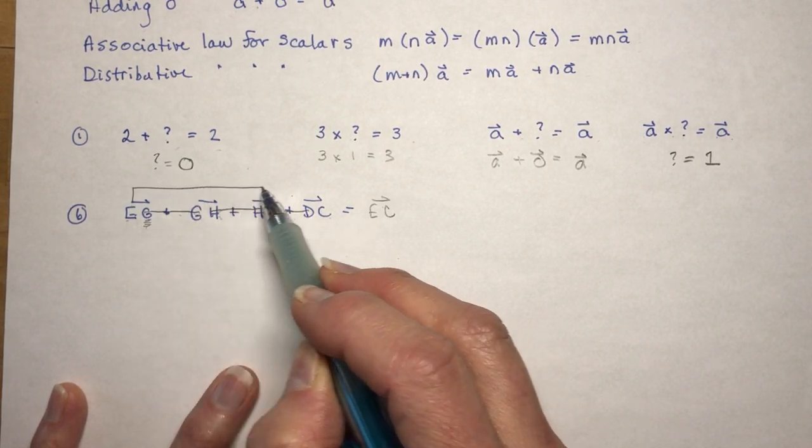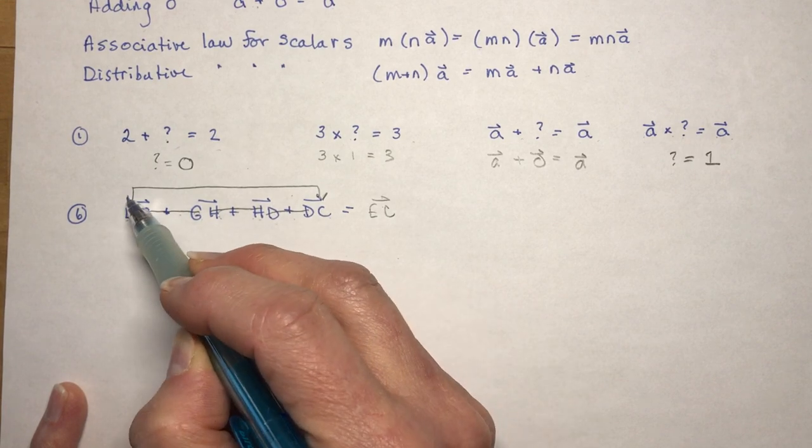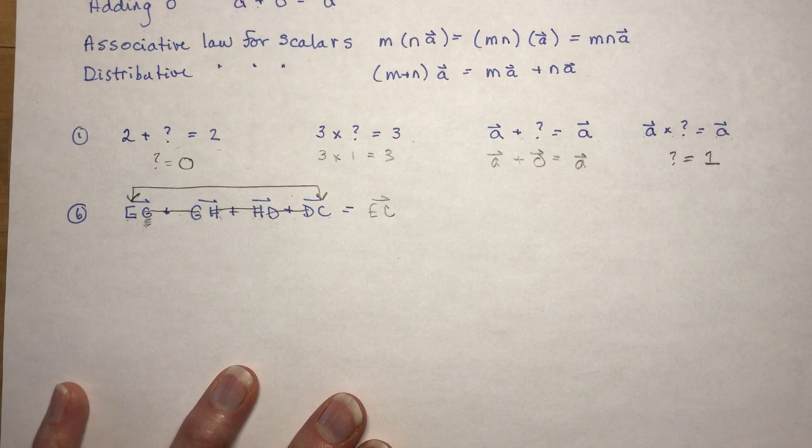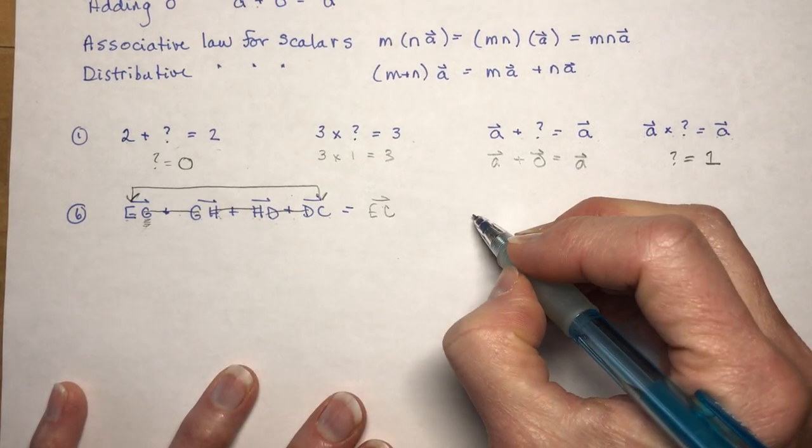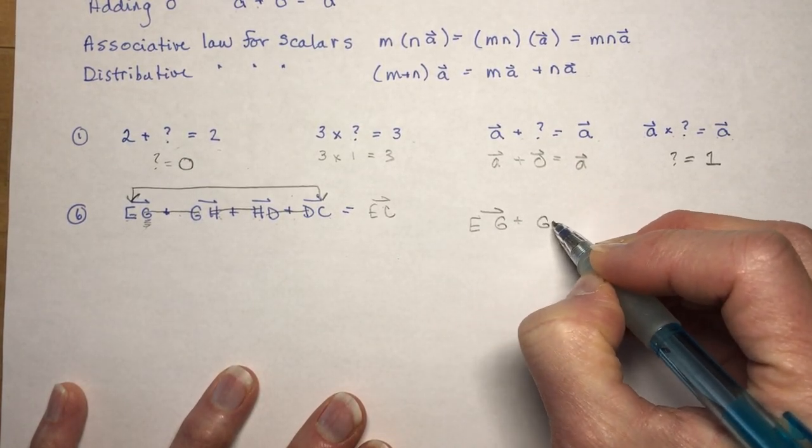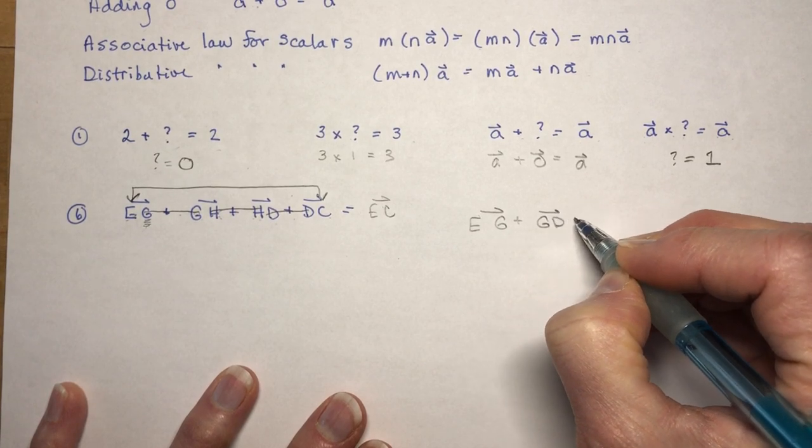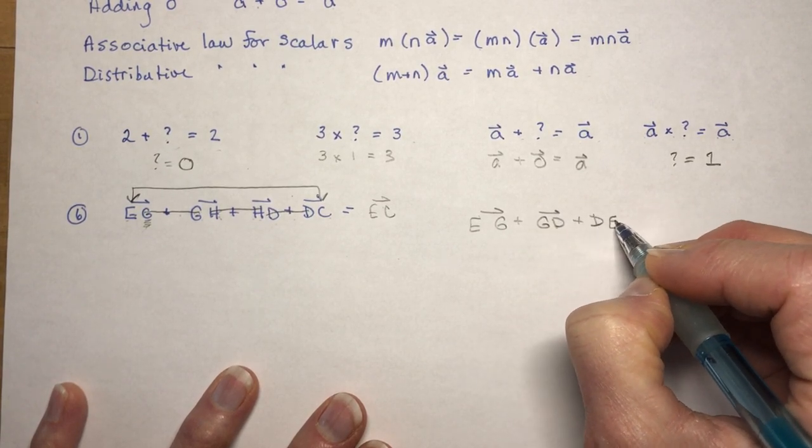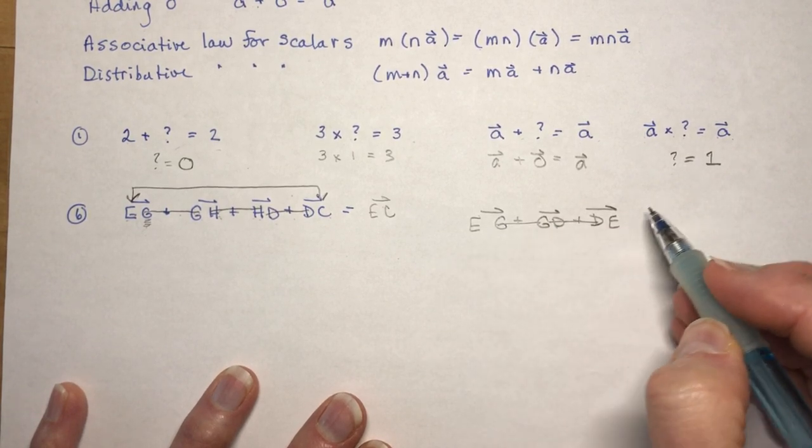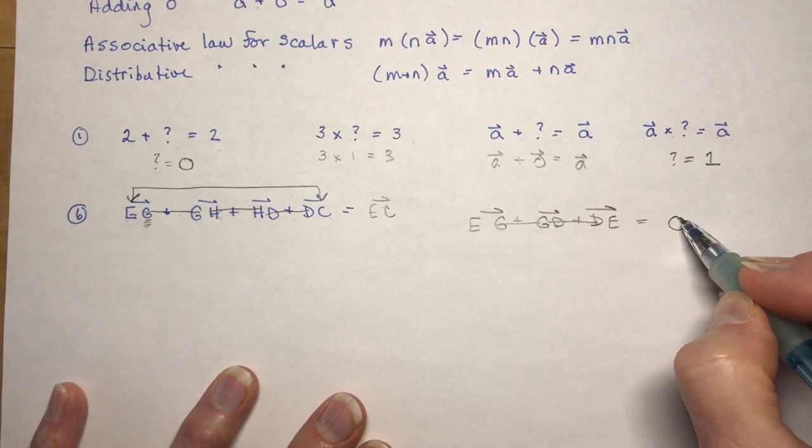Then there was another one: write a vector that is equivalent to EG + GD. These are in the same order. If I go G to G and D to D, I've got E to E, so that is the zero vector. Bingo.